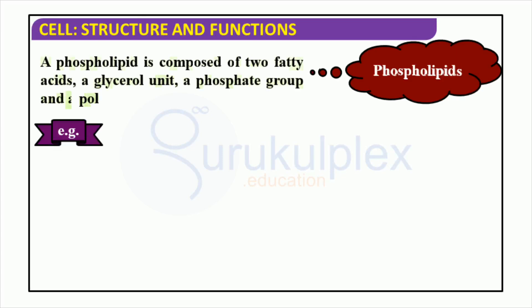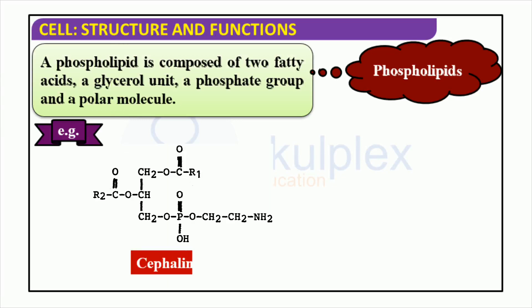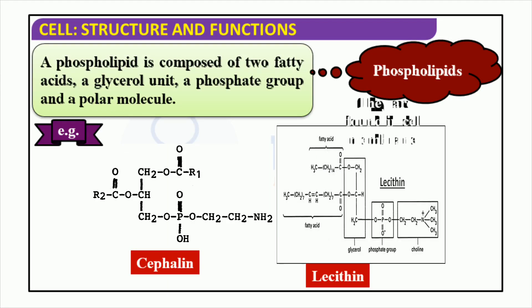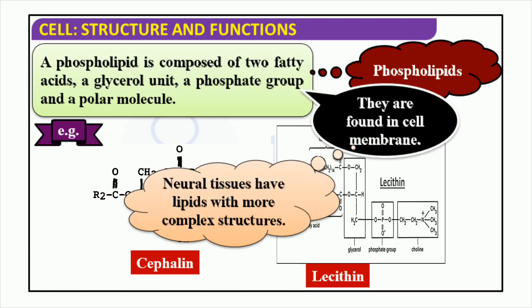Phospholipids, a type of biomolecule, consist of a glycerol, two fatty acids, a phosphate group, and a polar molecule. They are found in cell membranes and neural tissues, which could possibly possess more complex lipid structures. Phospholipids are vitally important for many cellular activities, such as growth, division, and signaling.